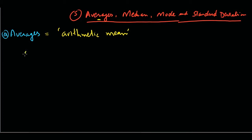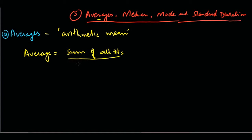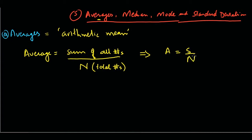An average is simply defined as the sum of all the numbers in a data series divided by the total number of numbers in that data series, represented by n. A good shorthand is: A for average, S for sum, and n for total numbers.